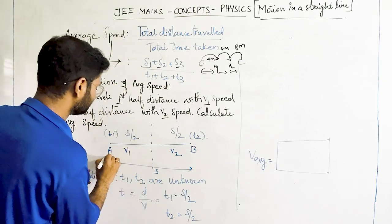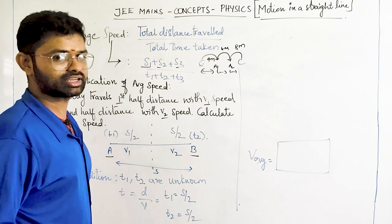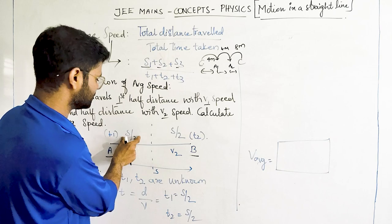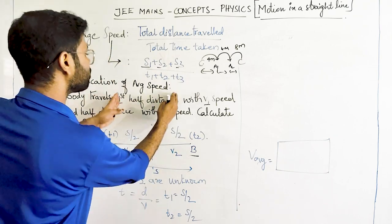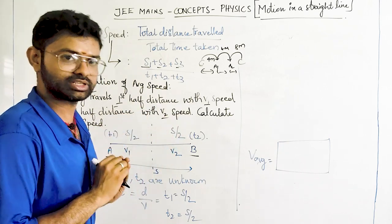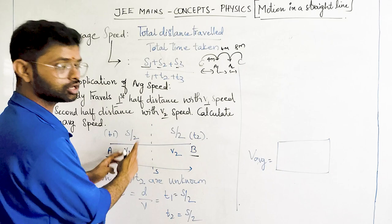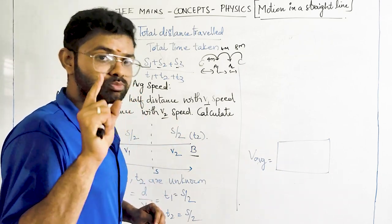So the problem becomes very simple if we solve the diagram like this. Let us consider that the object is travelling from point A to point B and total distance travelled is S. And this is your first half distance which is S by 2 and second half distance is S by 2. So here half of the distance is already given in the question. So S by 2, S by 2.